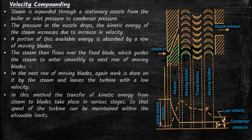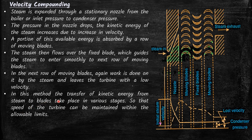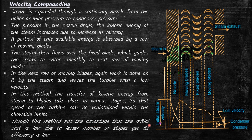In this method, the transfer of kinetic energy from steam to blades takes place in various stages, so that the speed of the turbine can be maintained within the allowable limits. We are transferring the kinetic energy from the steam to the turbine in stages — first in the first row of moving blades, then in the second set of moving blades. Though this method has the advantage of low initial cost due to fewer stages, its efficiency is less compared to other compounding methods.